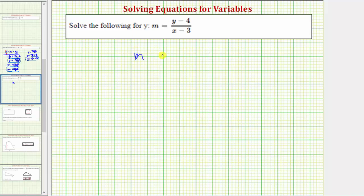We want to solve the equation m equals the quantity y minus four divided by the quantity x minus three for the variable y.